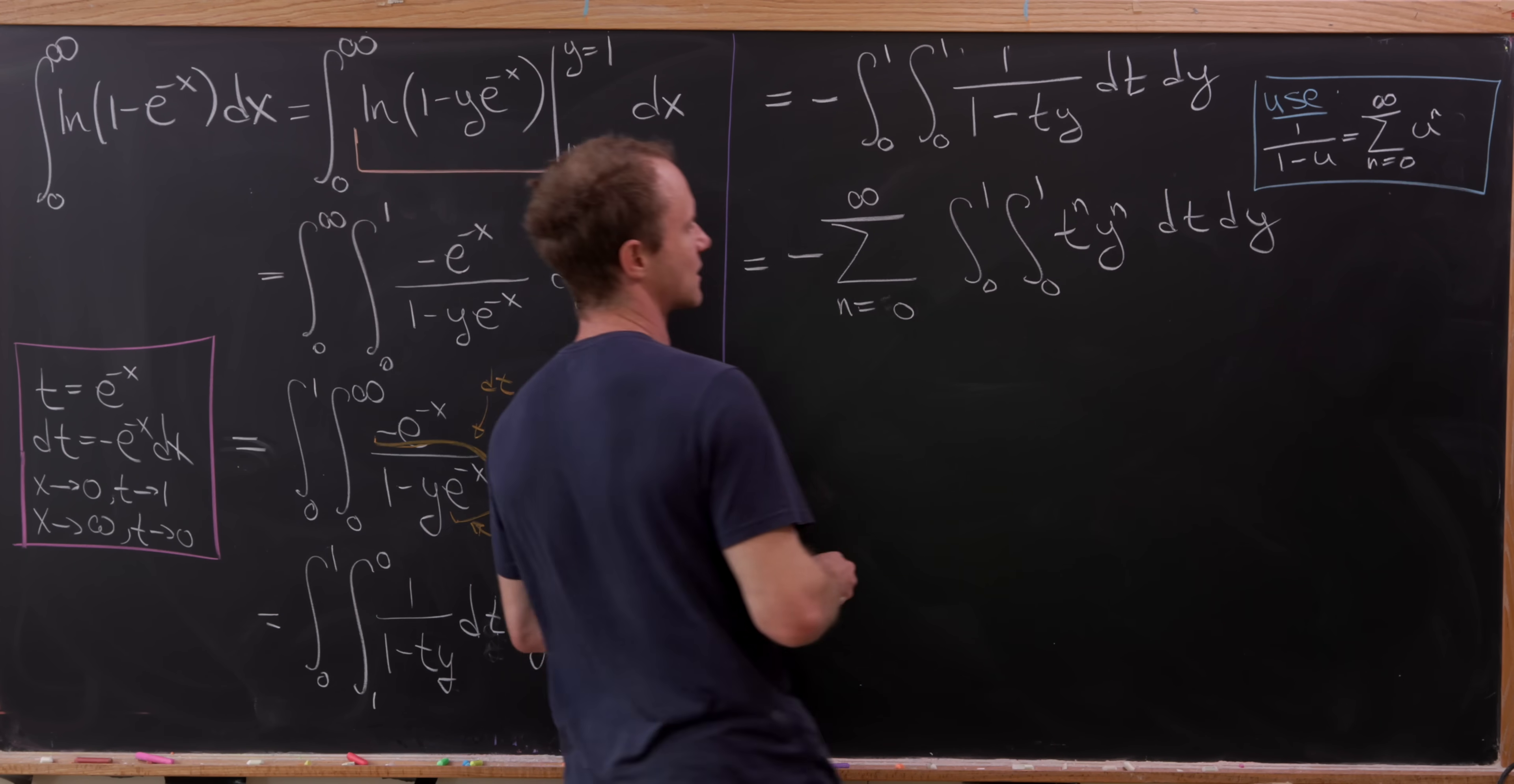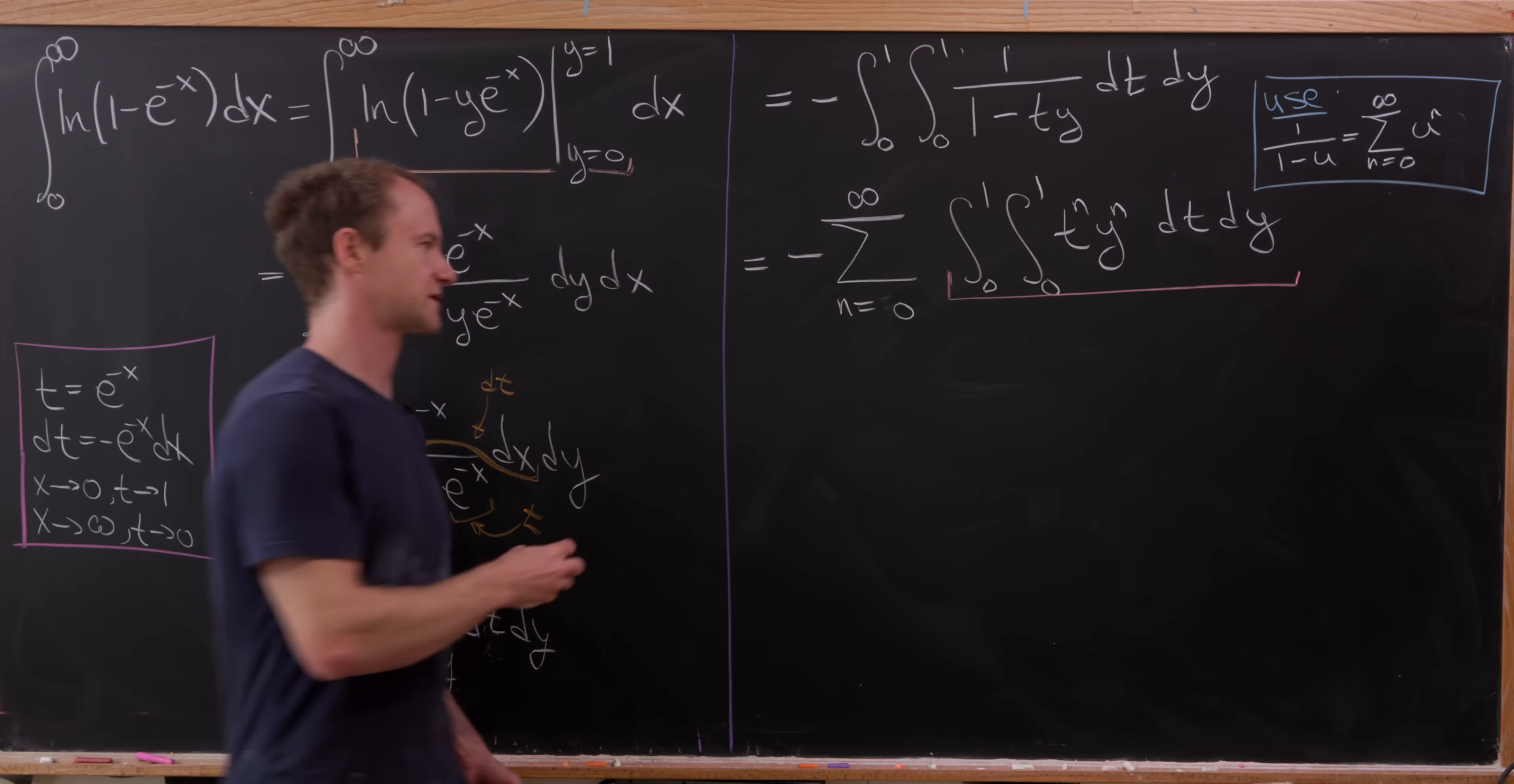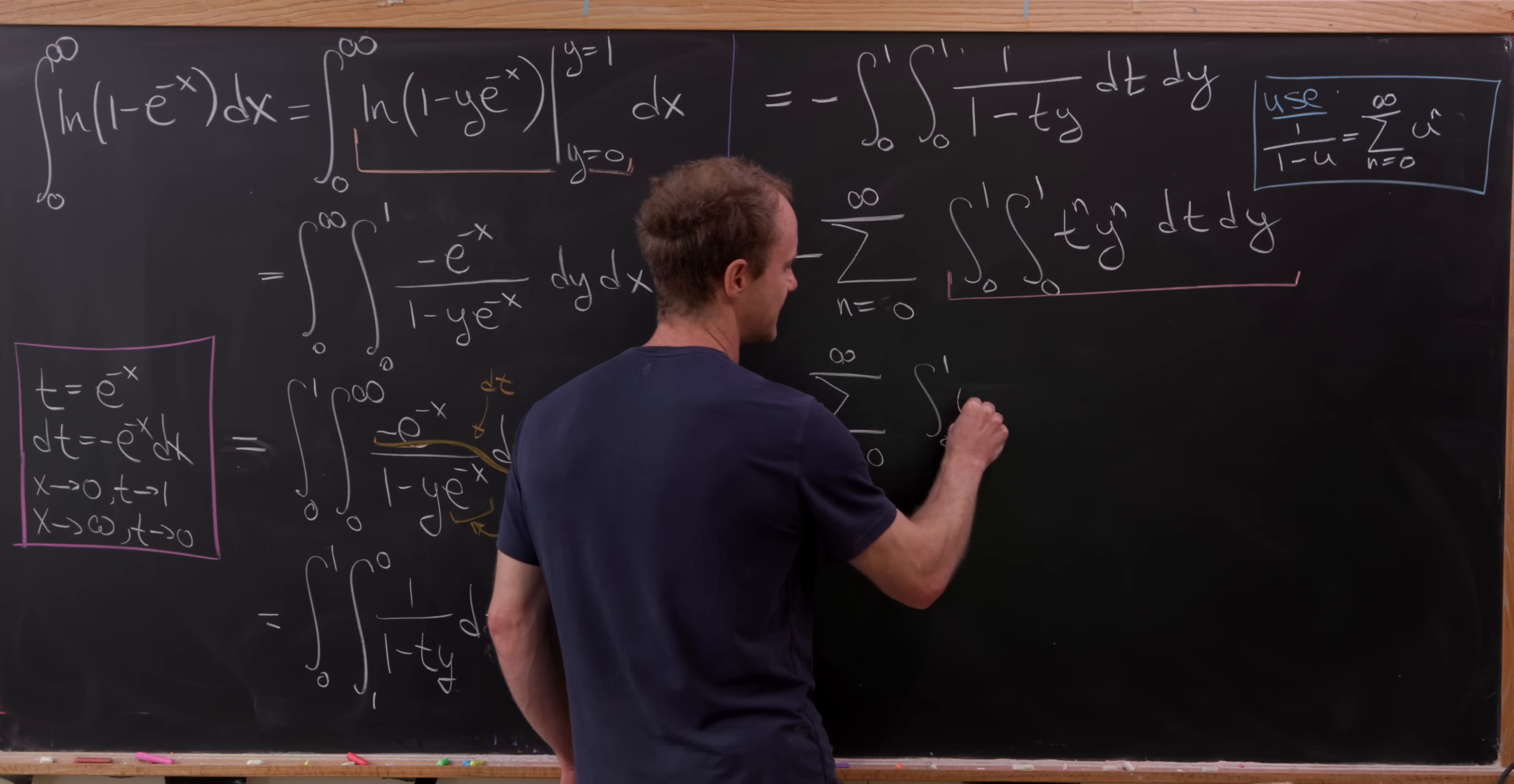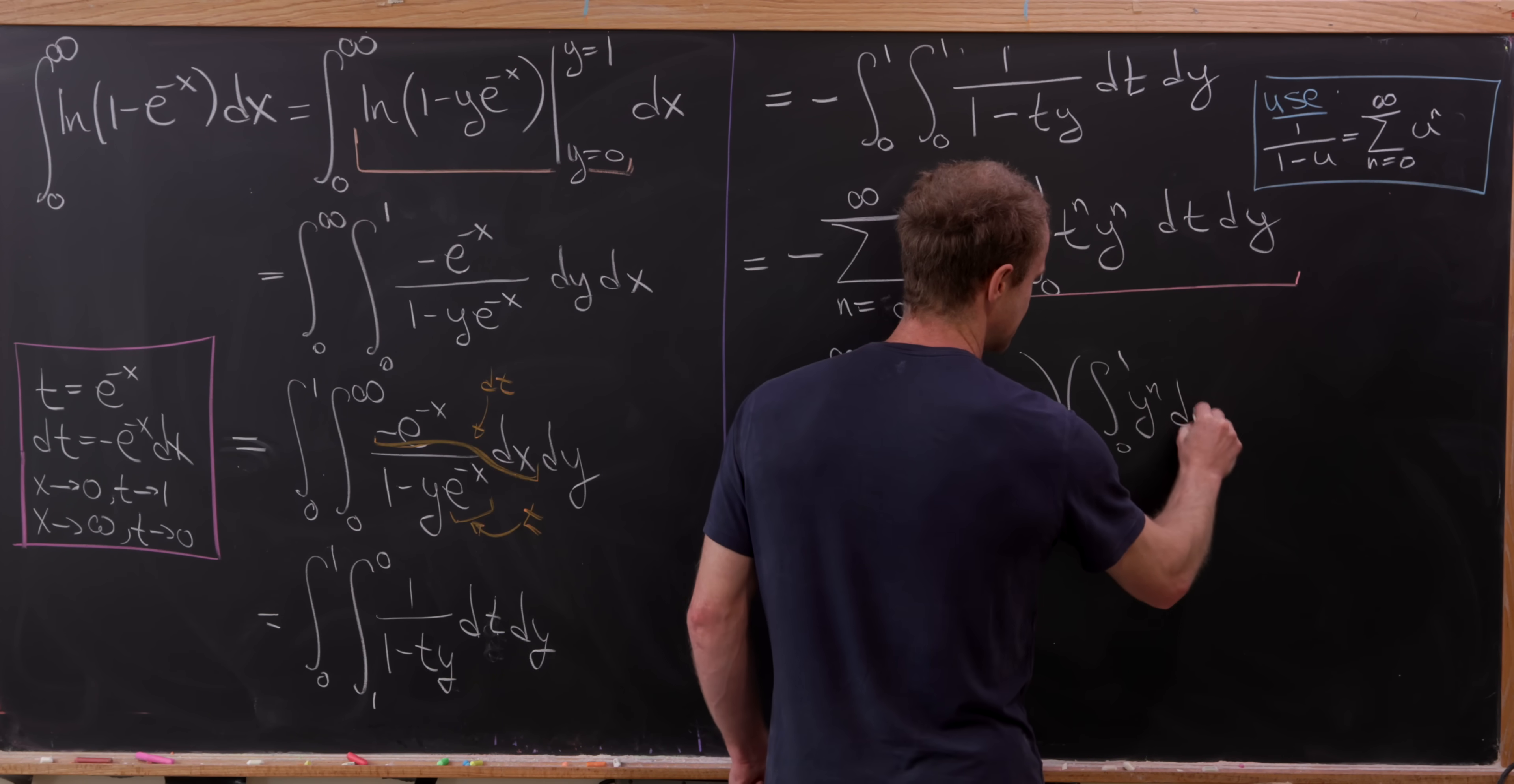But now let's observe that this double integral right here is in fact simply a product of two single integrals. So this is minus the sum as n goes from zero up to infinity of the integral from zero to one of t to the n dt times the integral from zero to one of y to the n dy.